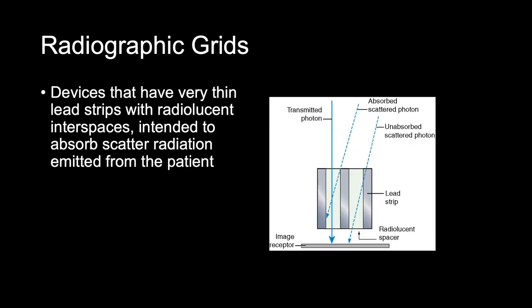Radiographic Grids. This is part 2 of chapter 12 from the Johnston and Fauber book, Essentials of Radiographic Physics and Imaging. The radiographic grid was invented in 1913 by Gustav Bucky and continues to be the most effective means for limiting the amount of scatter radiation that reaches the IR.